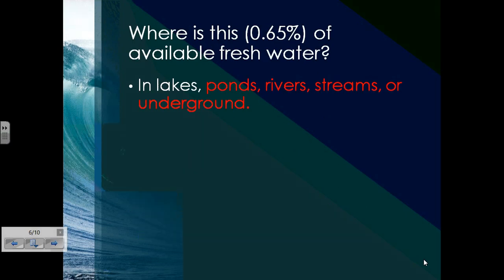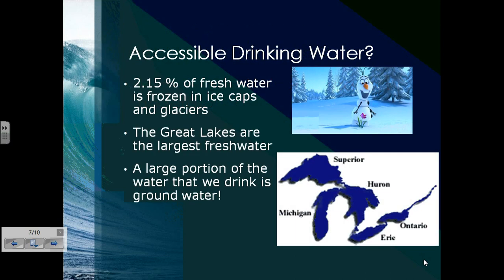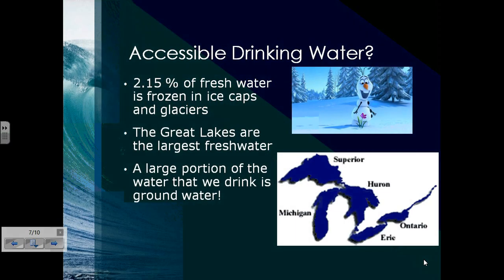The 0.65% — or less than 1% — of available fresh water that we actually use is found in lakes, ponds, rivers, streams, or in underground reservoirs. About 2.15% of fresh water is frozen in ice caps and glaciers. The Great Lakes represent the largest fresh water source in the United States area. A large portion of the water we actually drink is groundwater, located underground in wells and so forth.